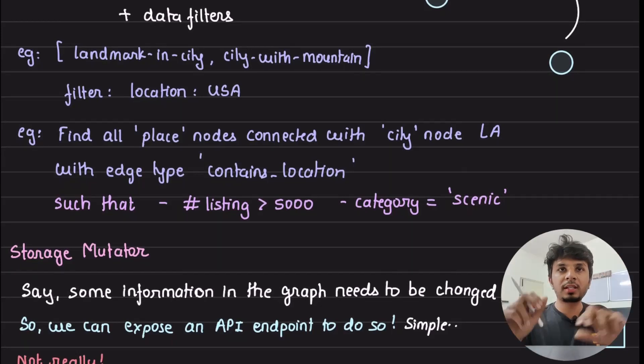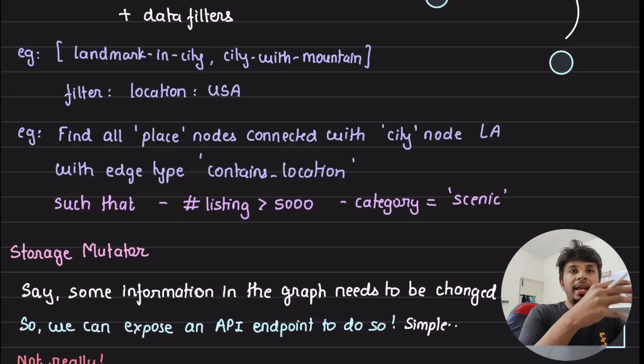For example, you might want to find all the places, like all place nodes, connected with a particular city node Los Angeles, with edge type contains-location, where listings are more than 5,000 and they are in scenic category. Which means that I want to find out all famous places in Los Angeles where number of listing is more than 5,000 and they have a scenic view in them.